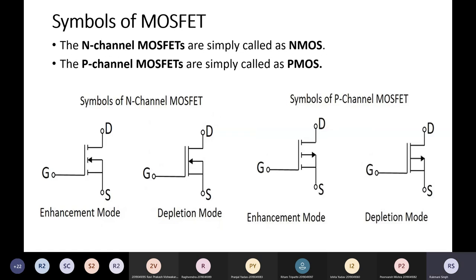Here are the symbols of enhancement mode and depletion mode for P-channel and N-channel. For the enhancement mode, there is a dotted or broken line here, but for the depletion mode, this line is connected. That is the only difference between the enhancement mode and depletion mode symbols. For N-channel MOSFET the arrow side will be pointing inward, and for P-channel MOSFET the arrow side will point outward. For enhancement mode there will be a dotted line, and for depletion mode a connected line.